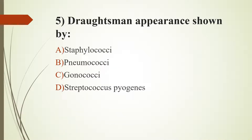Fifth question: Draftsman appearance is shown by which option? Option A, staphylococci. Option B, pneumococci. Option C, gonococci. Option D, Streptococcus pyogenes. The answer is Option B, pneumococci.